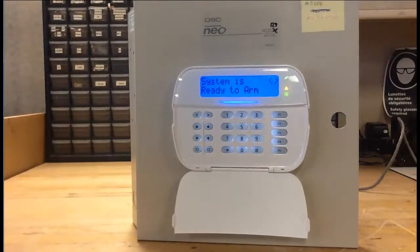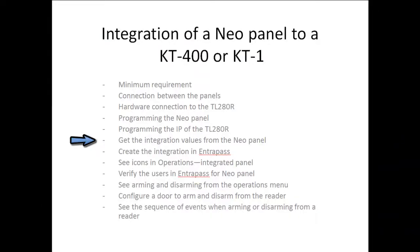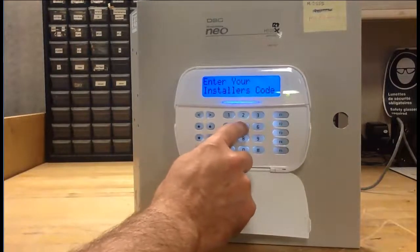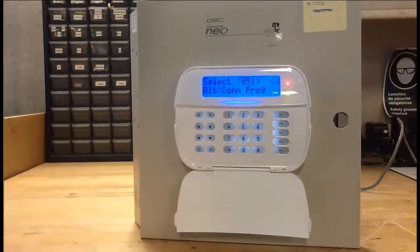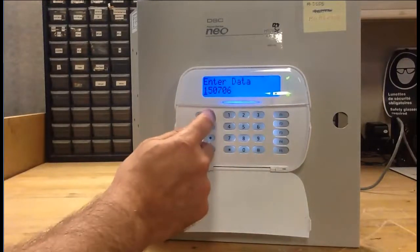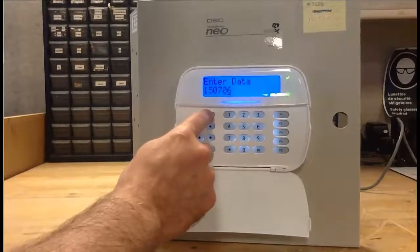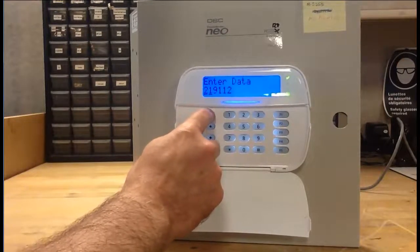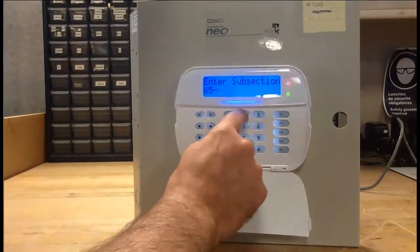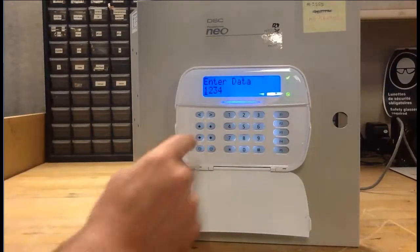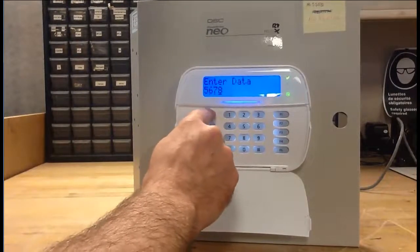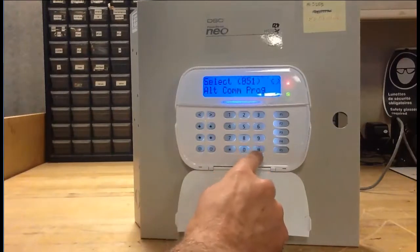Now we're going to take a look at getting the integration values from the NeoPanel. Once again, star 8 and then our installer code 5555. Then we're going to go to 851 and then subsection 651. You can scroll — you'll want to write that number down and scroll to the right to see all 12 numbers. You'll want to write that down because you'll have to enter it in EntraPass later on. Then go to subsection 652 — this time you have 8 characters. You'll want to copy those and make sure you enter the same thing in EntraPass.